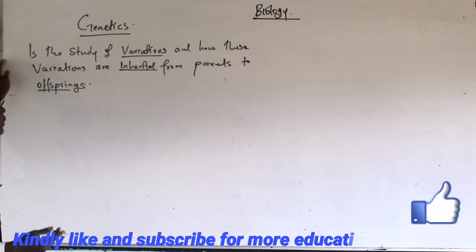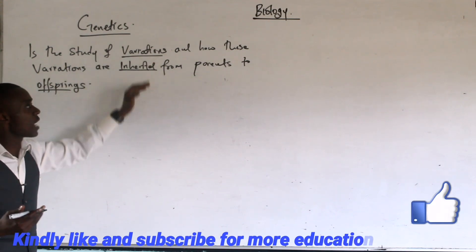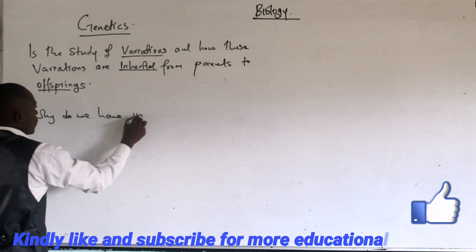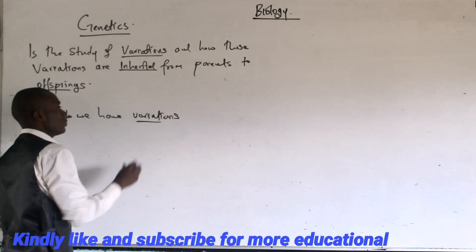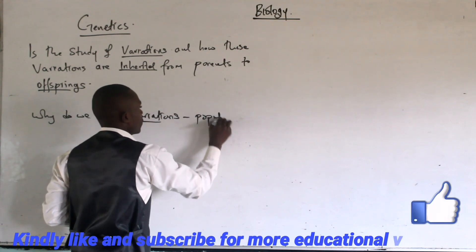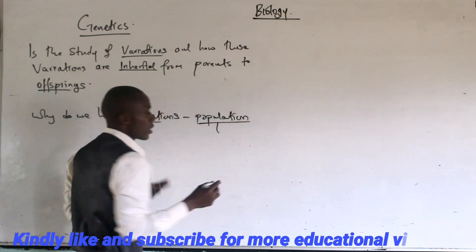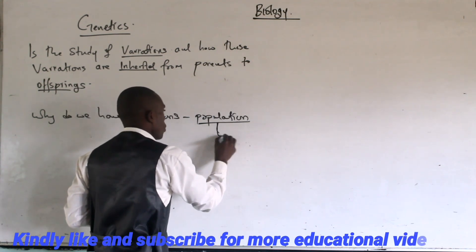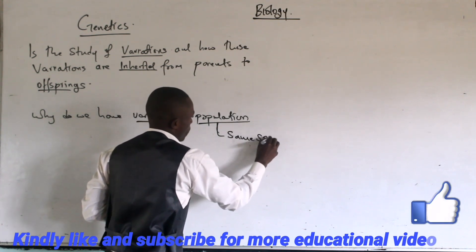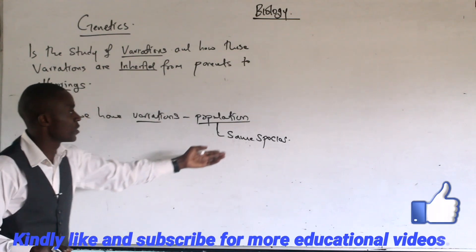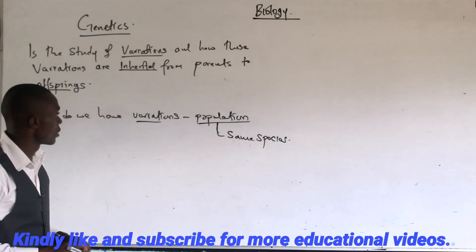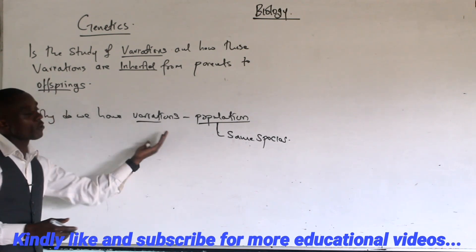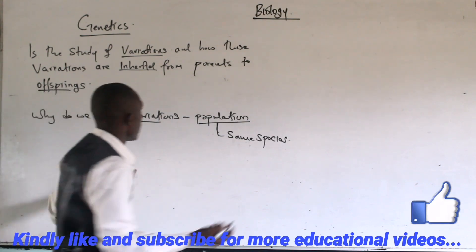In genetics, we are focusing on why do we have variations among a given population. I want you to understand this based on the concepts of ecology in Form Three - population is a group of organisms belonging to the same species. Why is it that we have individuals or organisms in the same species yet they have variations? After understanding what is variation, we shall focus on how are these variations transmitted from the parents to the offsprings.